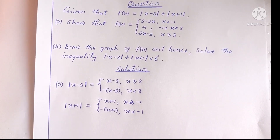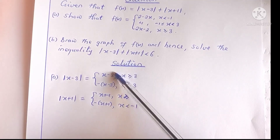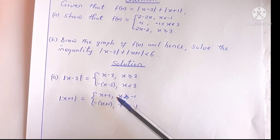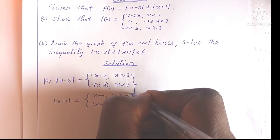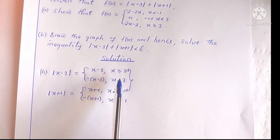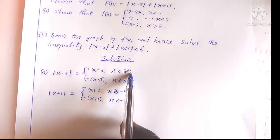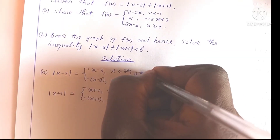At this point we need to find the intersections of these pairs of intervals. We have two intervals from each absolute value, giving four possible combinations. To get each intersection easily, you can represent the two intervals on the same number line and read out the intersection. If x is greater than or equal to 3 and x is greater than or equal to negative 1, the intersection is simply x greater than or equal to 3.